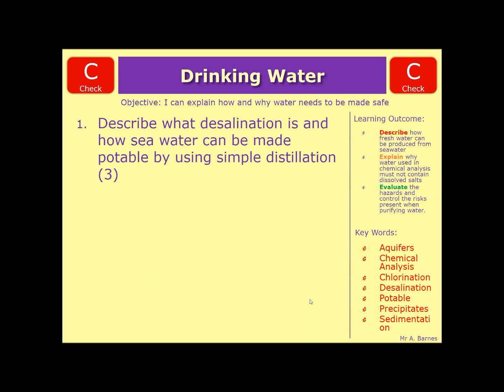Let's have a look through question one. It says describe what desalination is and how sea water can be made potable using simple distillation. The question here gives you a couple of clues. First one, it's a two-parter. You've got to say what this word desalination is, and then the second part is you need to know what the word potable means. You should have realized that from the video, and a simple distillation technique which accompanies it.